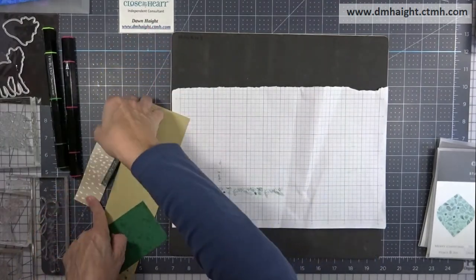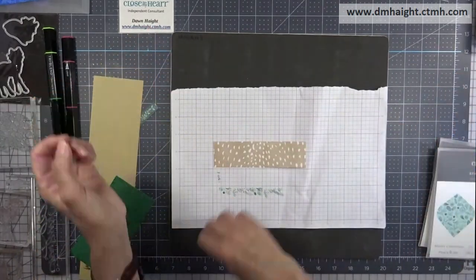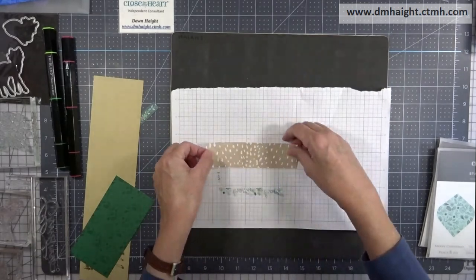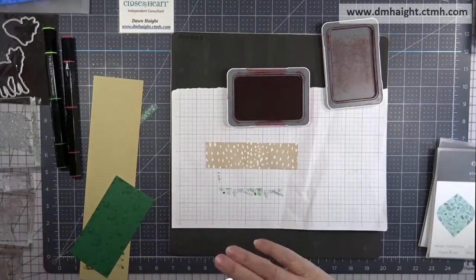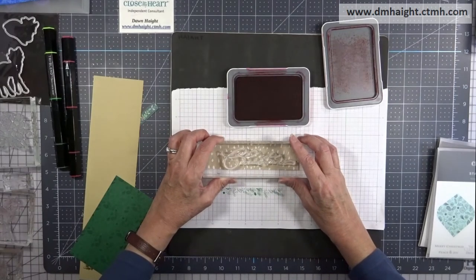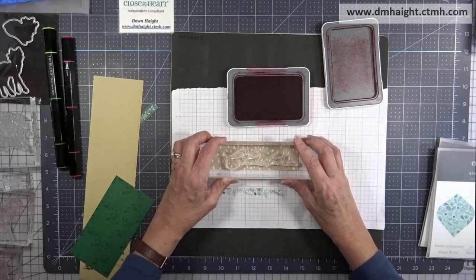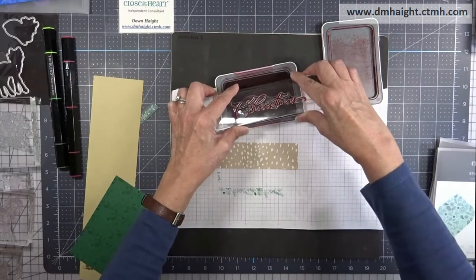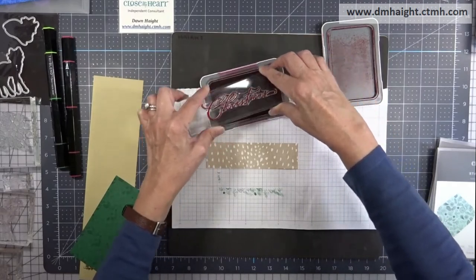Okay, and then I'm going to use that patterned paper that looks like deerskin. I'm figuring out which direction it goes. I'm going to stamp my sentiment on that in candy apple. So I'm going to stamp Christmas. I'm kind of figuring out the positioning. It's a large stamp, so I want to make sure that I get it on there correctly.